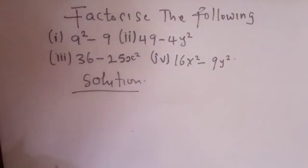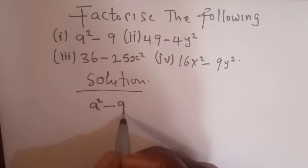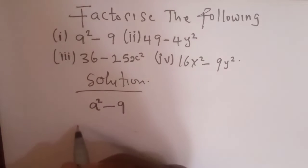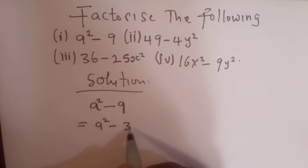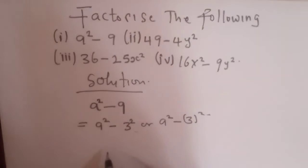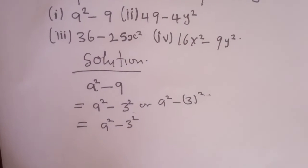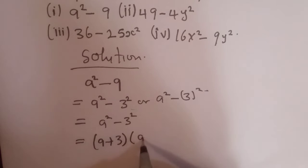Question one: a² minus 9. Since it's a difference of two squares, we take the square root of each term. We have a², and the square root of 9 is 3, so this is equal to a² minus 3², which can be written as (a + 3) multiplied by (a - 3).